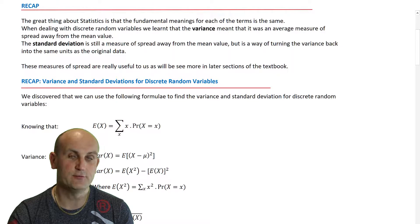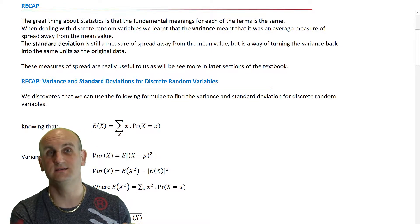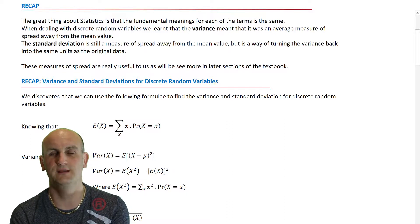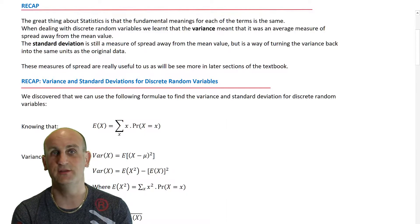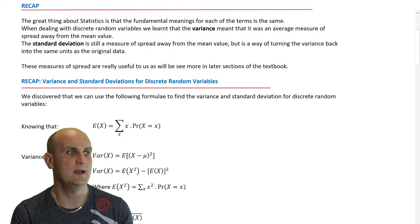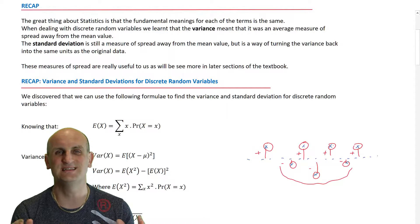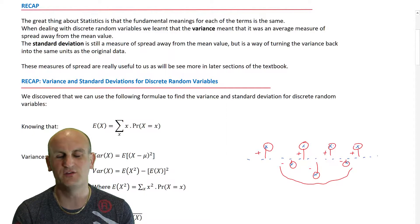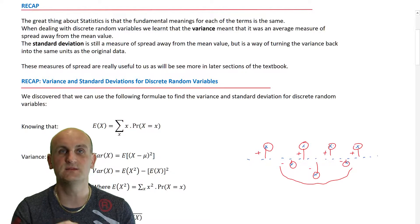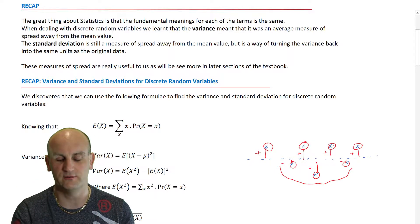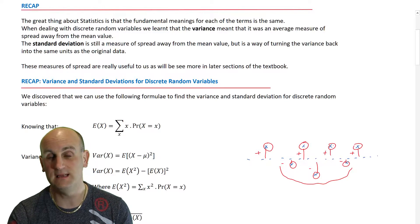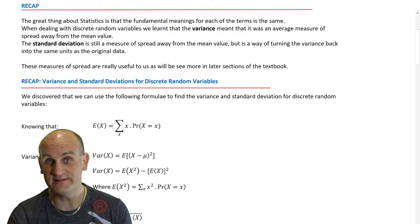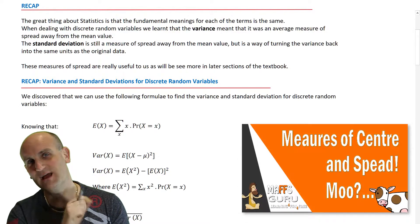As a recap — we've already done this in discrete random variables so I don't need to go too deeply into the meaning of variance and standard deviation. Variance is effectively a measure of the distance away from the mean of each data point. Values were positive and negative, so we squared them to make them all positive, took an average to get the distance from the mean, then square-rooted to get the standard deviation. If you don't understand that, go watch that video!